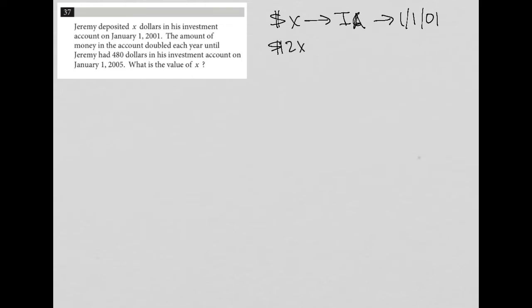So that means that it was at 2X on 1/1/02, and another doubling would be 4X on 1/1/03. Another double would be 8 times X on 1/1/04.